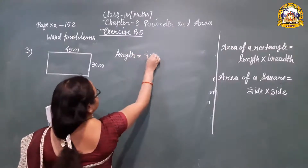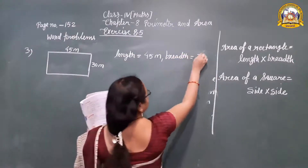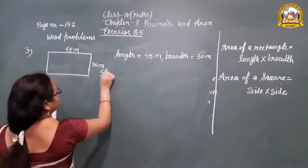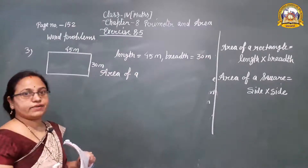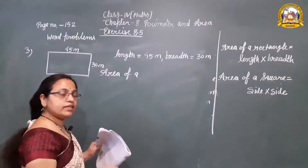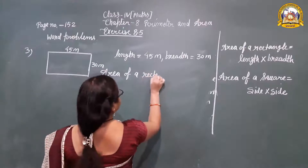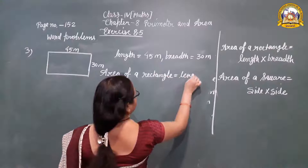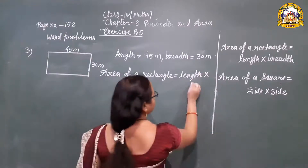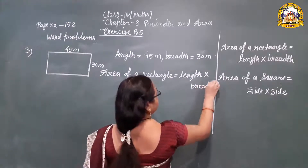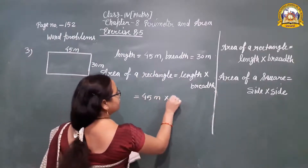The length of the swimming pool is 45 meters and the breadth is 30 meters. The swimming pool is in rectangle shape, so we apply the formula: area of a rectangle is equal to length into breadth. Putting the values: 45 meters into 30 meters.